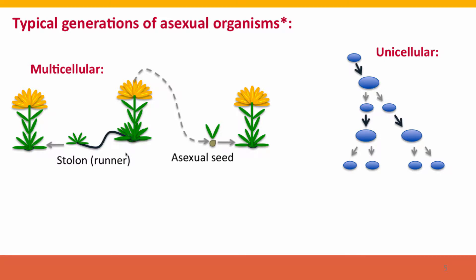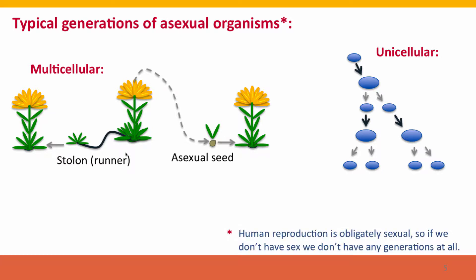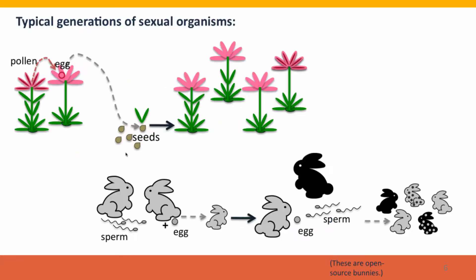This process doesn't apply to humans because we are obligately sexual — we can only reproduce sexually. If we don't have sex, we don't have any generations at all. So what about sexually reproducing organisms? Well, this applies to plants, animals, and many single-celled organisms as well.